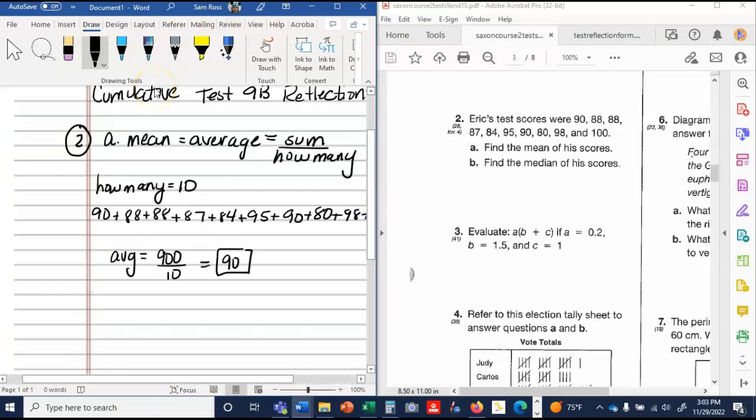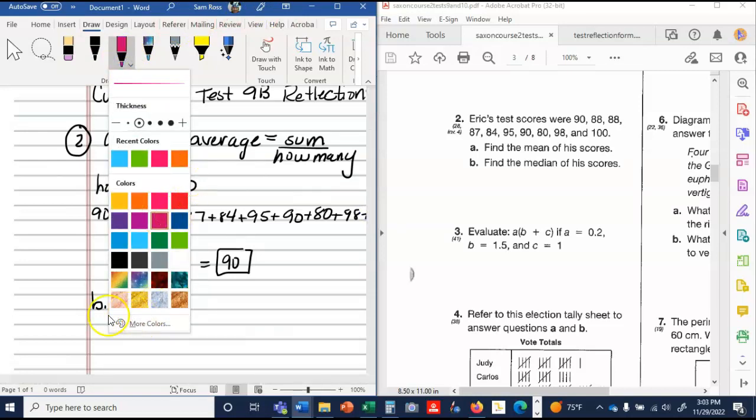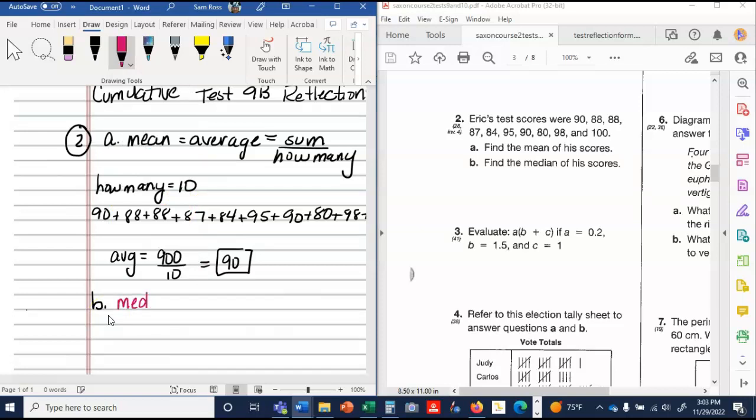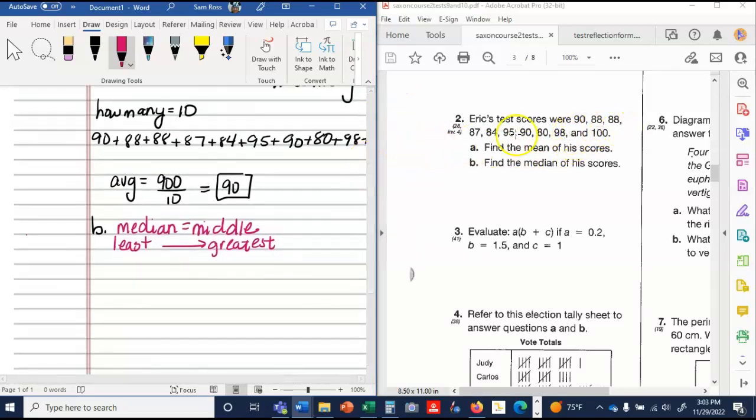If you miss that part, you're going to need to write all of this either in the square or on a separate sheet of notebook paper. B was probably one of the most missed. B says to find the median, which is the middle. So I need to list them from the least, and you should write all of this down, to the greatest. So let me go ahead and do that, and then we'll talk about how to find the middle. I would normally cross these off as I go: 80, 84, 87, 88, 88, 90, 90, 95, 98, and 100.